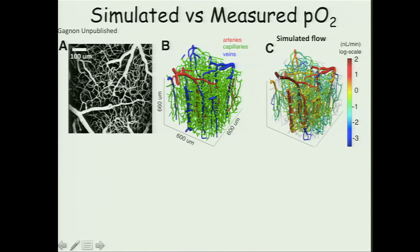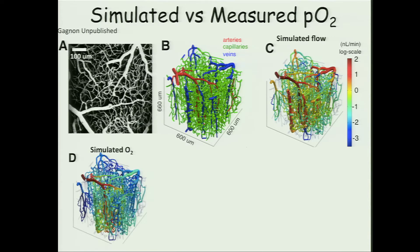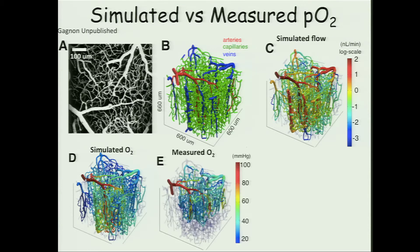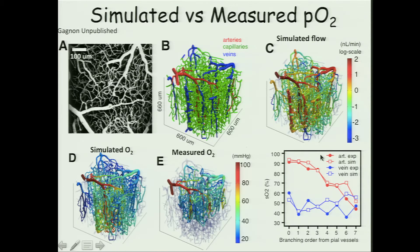So we start off with this vascular network. We can calculate flow through that vascular network. Given flow, you can now calculate the oxygenation, that's oxygen that's advecting through the vessels and diffusing into the tissue where it's consumed. We can compare that with experimental measurements, and we can see actually very good agreement between arterial oxygenation and venous oxygenation during different branch orders.